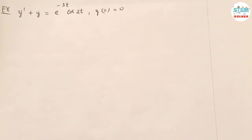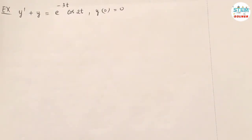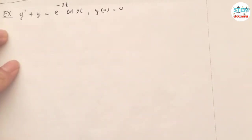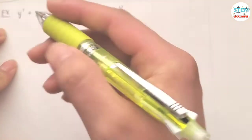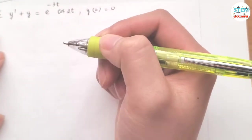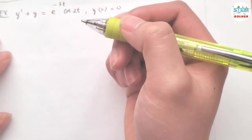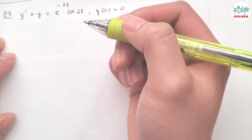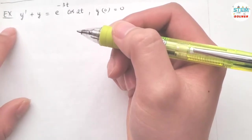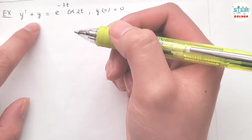Using the Laplace transform to solve the initial value problem: y prime plus y equals e to the negative 3t times cos 2t, with the condition y of 0 equals 0. First, we are going to use the transform of a derivative theorem on the left side.